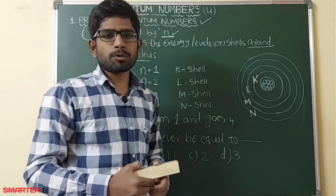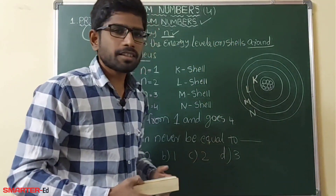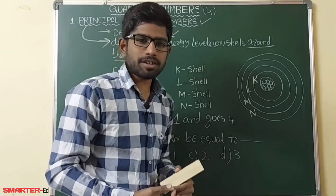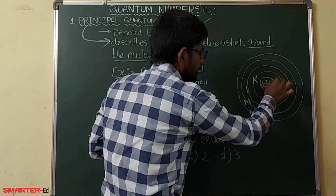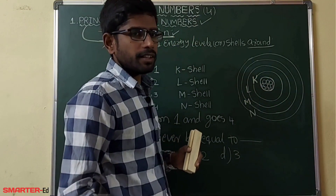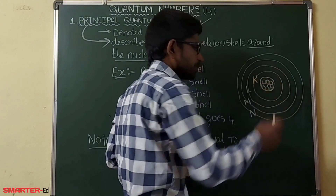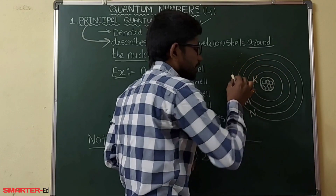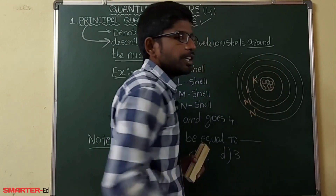We have a doubt — what are those energy levels and shells around the nucleus? In atomic structure, we know the nucleus has protons and neutrons, and electrons are revolving around the nucleus.